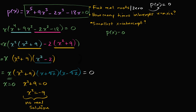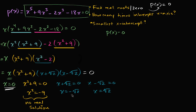Can x plus the square root of two equal zero? Sure — if we subtract the square root of two from both sides, we get x equals negative square root of two. And can x minus the square root of two equal zero? Sure — add square root of two to both sides, and you get x equals positive square root of two. So we have figured out our zeros: x equals zero, negative square root of two, and positive square root of two.